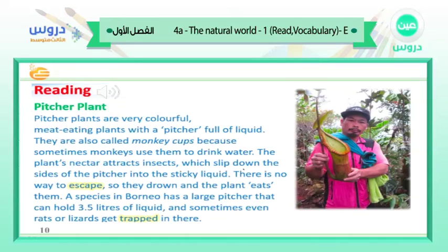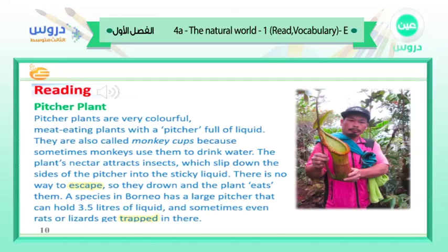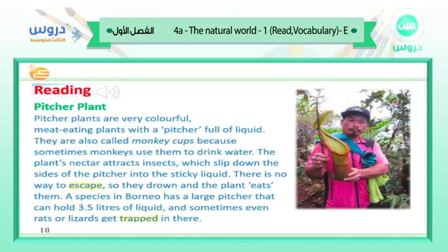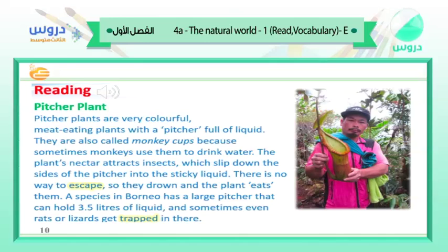Enormous pitcher plant: pitcher plants are very colorful, meat-eating plants with a pitcher full of liquid. They are also called monkey cups because sometimes monkeys use them to drink water. The plant's nectar attracts insects which slip down the sides of the pitcher into the sticky liquid. There is no way to escape, so they drown and the plant eats them. A species in Borneo has a large pitcher that can hold 3.5 liters of liquid, and sometimes even rats or lizards get trapped in there.